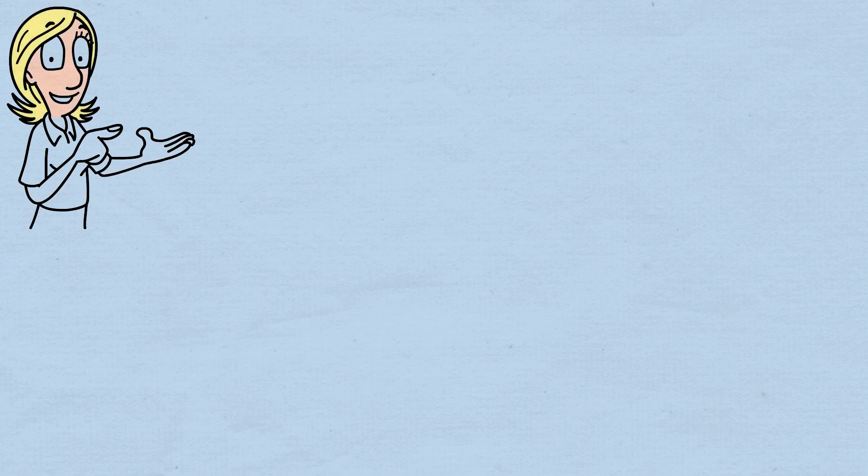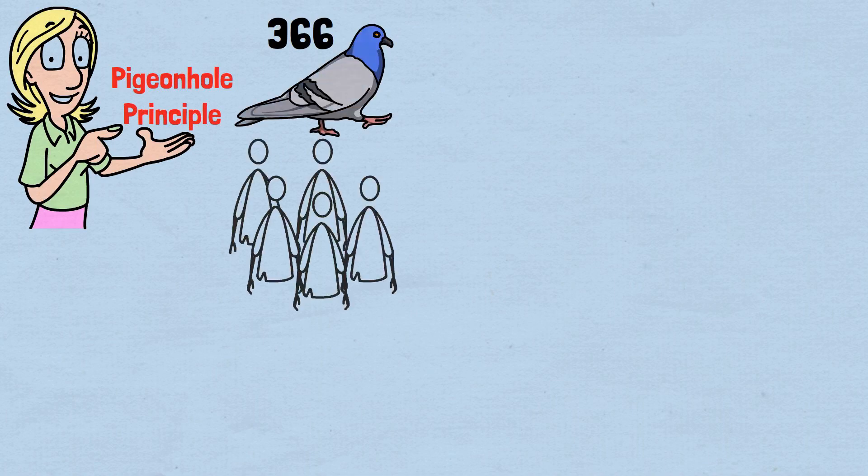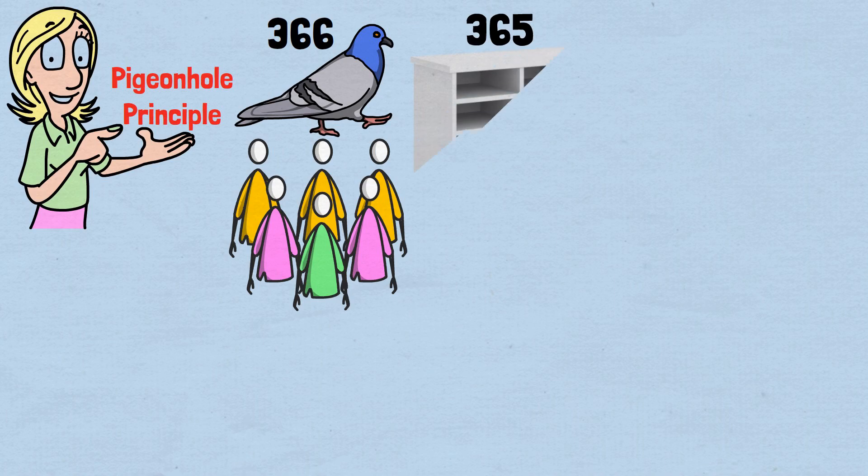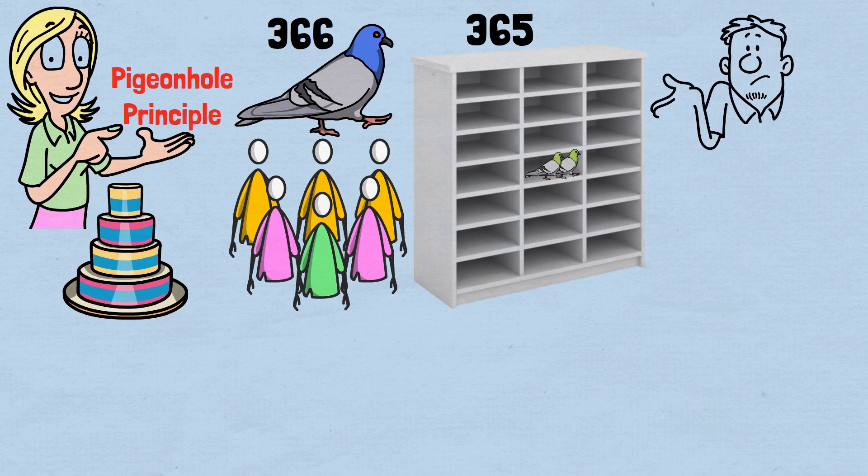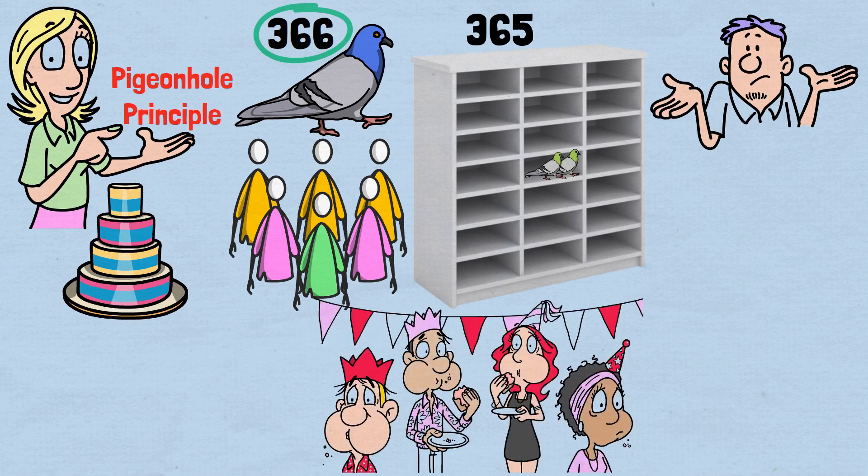This comes from a beautiful principle in mathematics called the pigeonhole principle. If you have 366 pigeons, people, but only 365 pigeonholes, possible birthdays, at least two pigeons must share the same whole. It's mathematically impossible for 366 people to all have different birthdays when there are only 365 possible days.